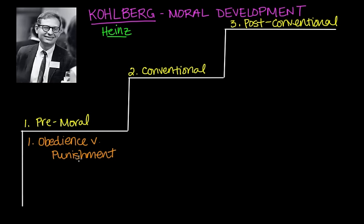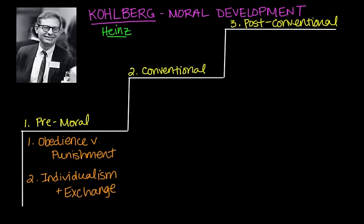The second stage is called individualism and exchange. In this stage, children recognize that there is not just one right view handed down by the authorities. They start to understand that different individuals have different viewpoints. After passing through these two stages, one can move up the ladder into the conventional stage.